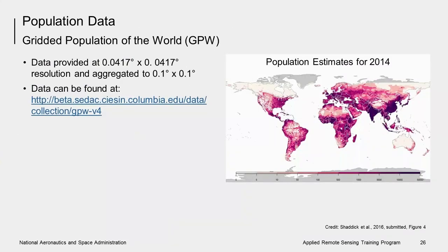The population dataset used was obtained from the Gridded Population of the World, or GPW database. These data are provided at a very fine resolution of 0.0417 by 0.0417 degrees, then aggregated to a larger resolution of 0.1 by 0.1 degrees. This plot shows the 0.1 by 0.1 degree map of population estimates used for 2014. GPW version 4 uses population and boundary data from hundreds of organizations, including national statistics offices, mapping agencies, and planning agencies.